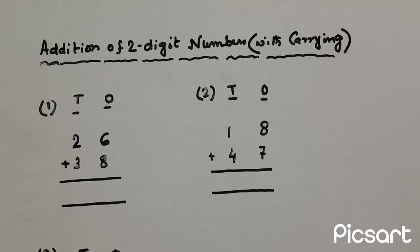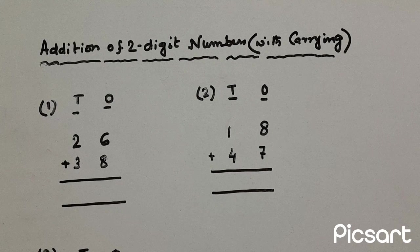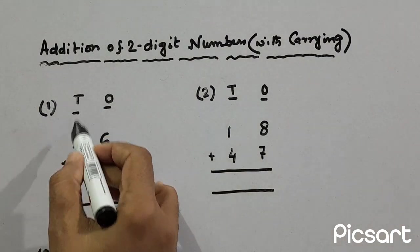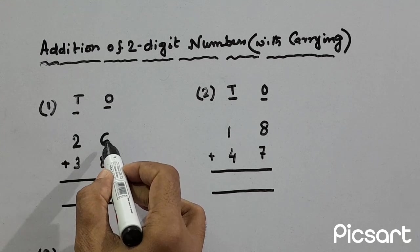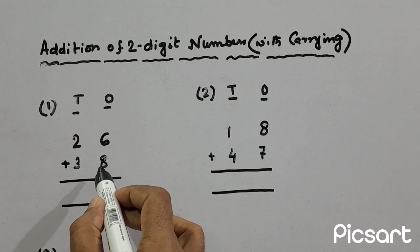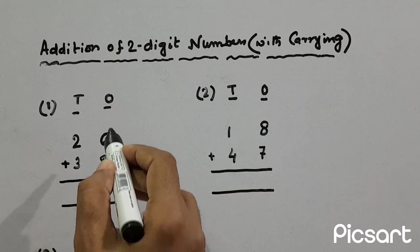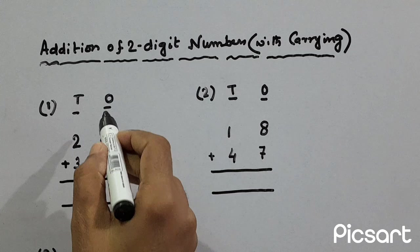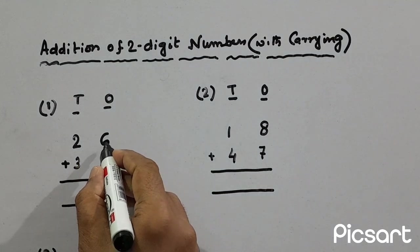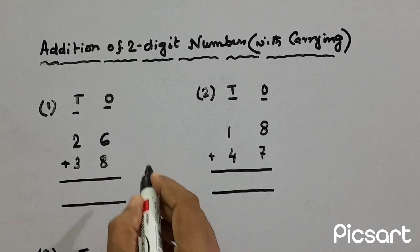So let us start now. First example, here we have to add two tens and six ones with three tens and eight ones. So first we'll add the ones column numbers. So 6 plus 8 is 14.